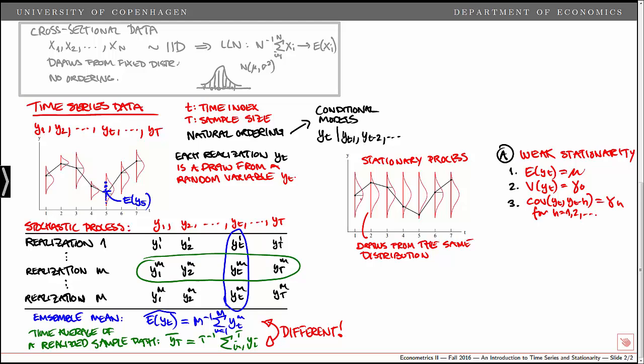Stationarity implies that now, instead of having each observation being a random draw from one distribution, they are now draws from the same distribution. And that actually allows us to use the realized sample path here to characterize the underlying distribution.